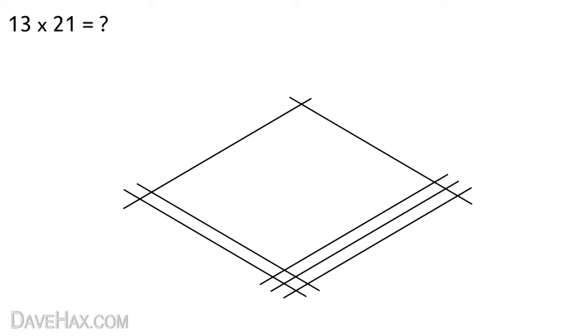Once we've drawn it out we need to separate it into three separate zones where the lines cross like this. Then starting from the right-hand zone we need to count how many times any of the lines cross. In this case 3. We write that here and move on to the next zone.